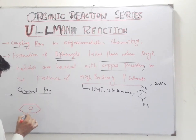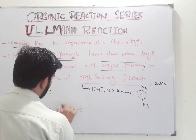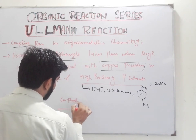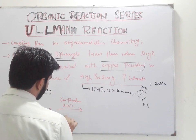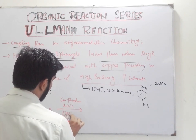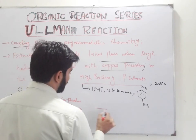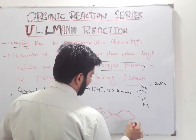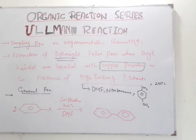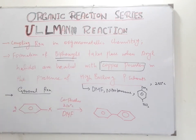Aryl halides are heated with copper powder at a temperature of 210°C in the presence of high boiling polar solvents. Then there is formation of biphenyls. So, biphenyl is formed from aryl halides when aryl halides are treated with copper powder in the presence of high boiling polar solvents.